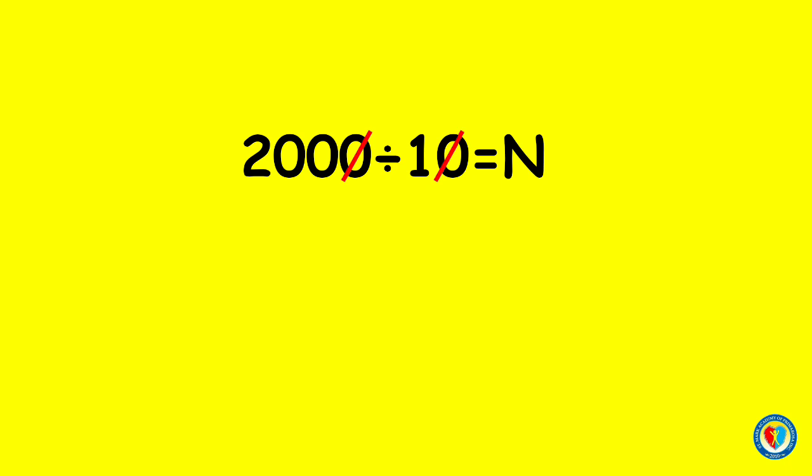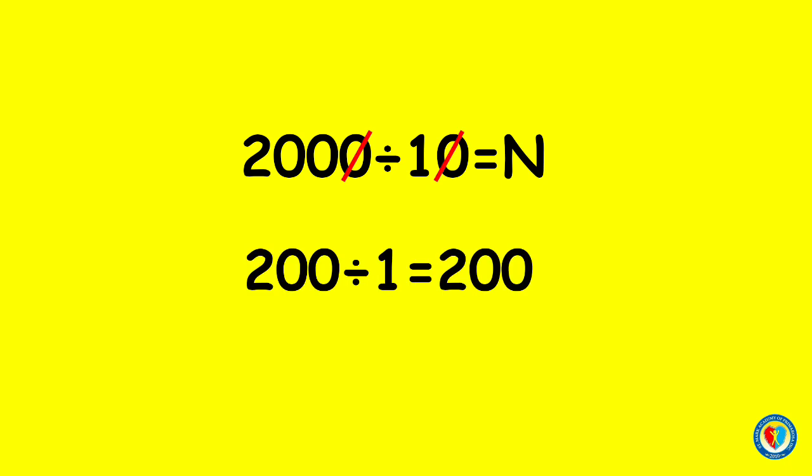Now, you can easily divide the number. Remember, a number divided by 1 is that same number. 200 divided by 1 equals 200.